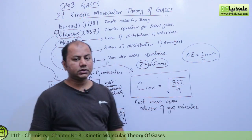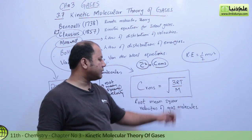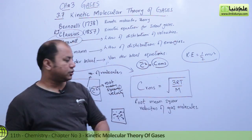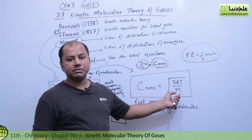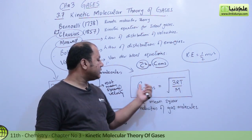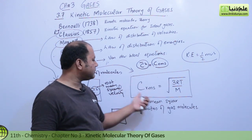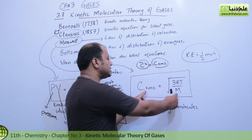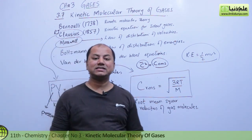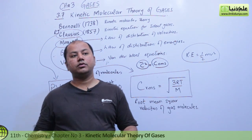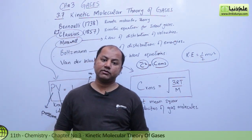The formula for root mean square velocity is the square root of 3RT over M, where R is the ideal gas constant, T is the temperature, and M is the molecular mass. You will notice that root mean square velocity is inversely proportional to molecular mass: if the mass of a gas increases, the root mean square velocity decreases. Heavier gases have lower velocities and lighter gases have higher velocities.